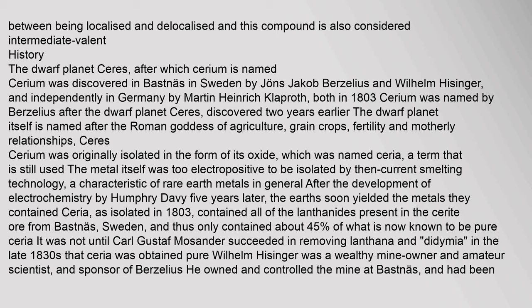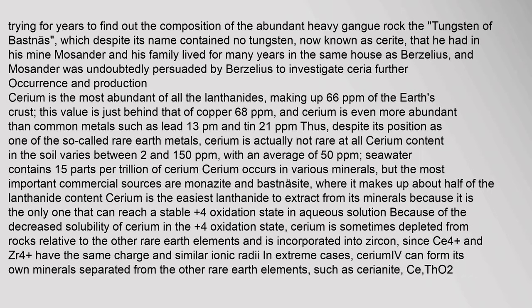The ceria isolated in 1803 contained all of the lanthanides present in the cerite ore from Bastnäs, Sweden, and thus only contained about 45% of what is now known to be pure ceria. It was not until Carl Gustav Mosander succeeded in removing lanthana and didymia in the late 1830s that ceria was obtained pure. Wilhelm Hisinger was a wealthy mine owner and amateur scientist, and sponsor of Berzelius; he owned the mine at Bastnäs and had been trying for years to find out the composition of the abundant heavy gangue rock, now known as cerite.